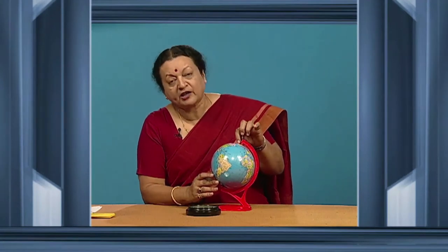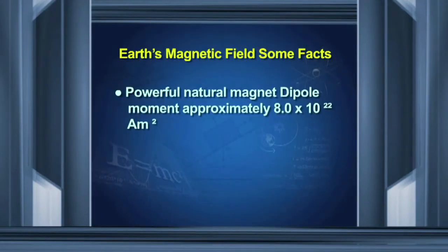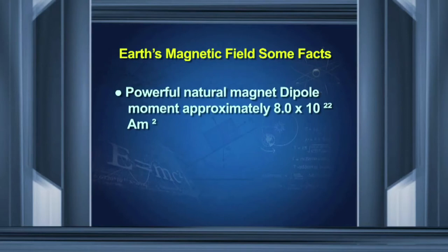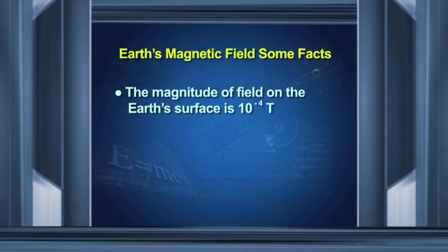That means the magnetic south pole is not exactly coincident with the geographic north, which passes through the rotation axis. Some more known facts: the magnetic dipole inside the Earth has a dipole moment of around 8 × 10²² ampere metre squared. The dipole axis is inclined relative to the axis of rotation by 11.3 degrees. On the surface of the Earth, the magnetic field is found to be around 10⁻⁴ Tesla.